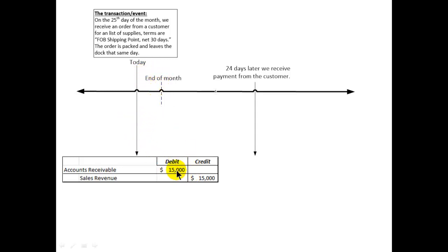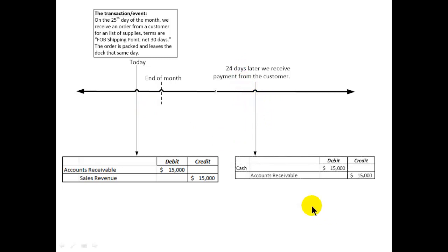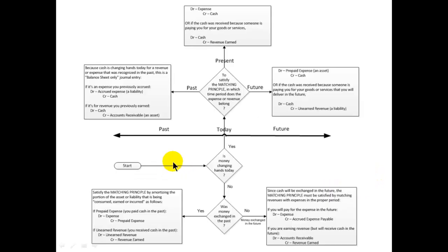This fifteen thousand of revenue will be shown in the current month. Then 24 days later, when the customer pays us, we debit cash for fifteen thousand and credit accounts receivable for fifteen thousand. Everything is settled. This next diagram may look a little busy, but hopefully once we break it down it won't seem so complicated.